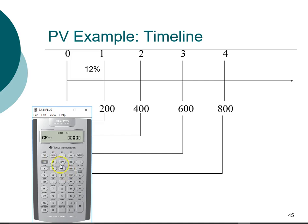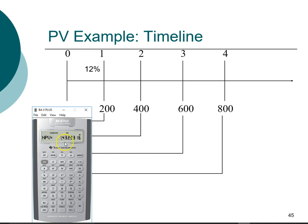To solve, go to the NPV function. Enter the interest rate: 12, press Enter. Scroll down to NPV — it prompts you to press Compute. Press Compute, and you get the same answer as before: the present value is $1,432.93.